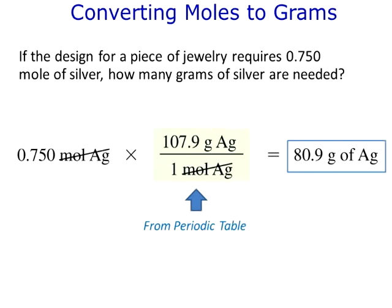Another problem: if a piece of jewelry requires 0.750 moles of silver, how many grams are needed? The given is 0.750 moles, so the first conversion factor must contain moles on the bottom. Placing one mole on the bottom and using the periodic table value of 107.9 g/mol for silver, we calculate to three sig figs and get 80.9 grams of silver.